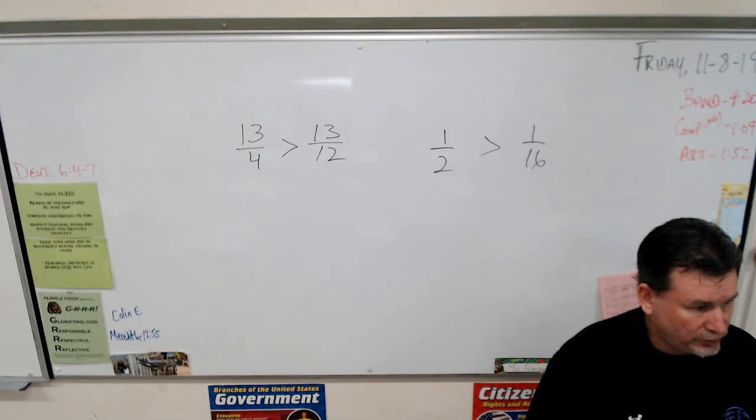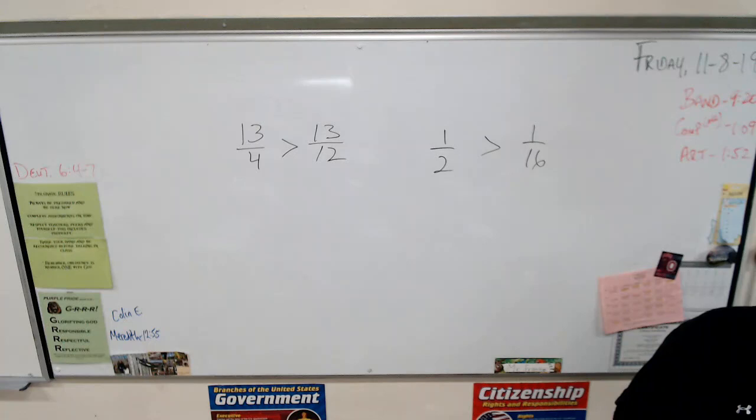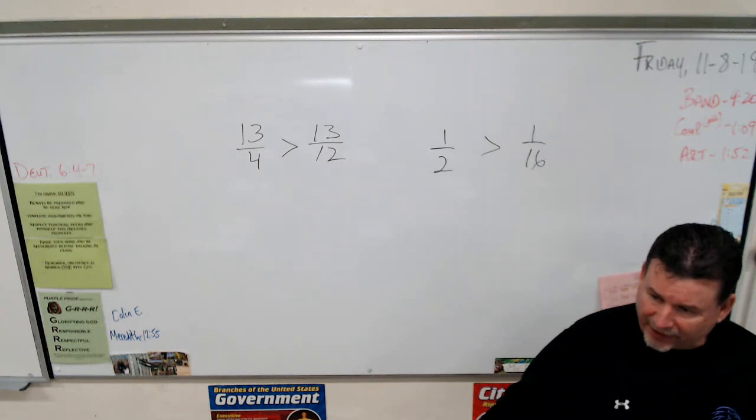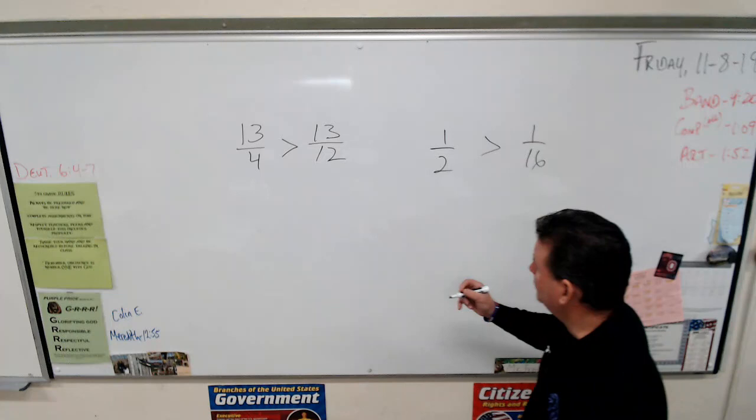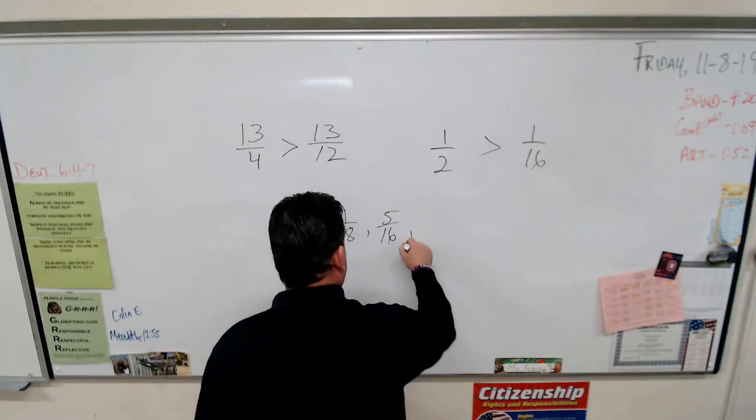Number 14, follow along. You put a greater than sign in between. Number 15, you put a greater than sign in between. Number 16, you put a less than sign in between. And here's how you did number 17: 1/8, oh yes I did it, 5/16.